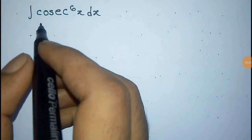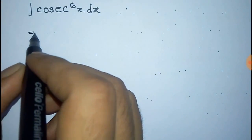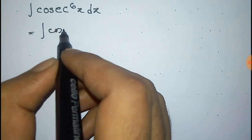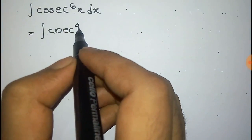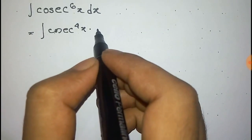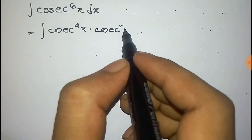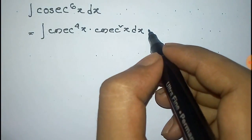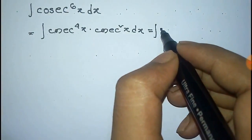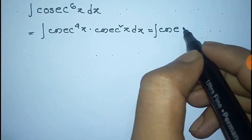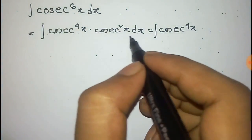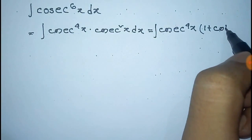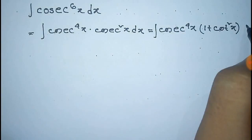We have to integrate cosec to the power 6x dx. We can write cosec to the power 6x as the product of cosec to the power 4x into cosec square x. This is equal to cosec to the power 4x, where we write cosec square x as 1 plus cot square x, into dx.